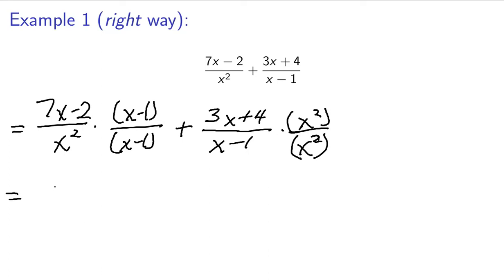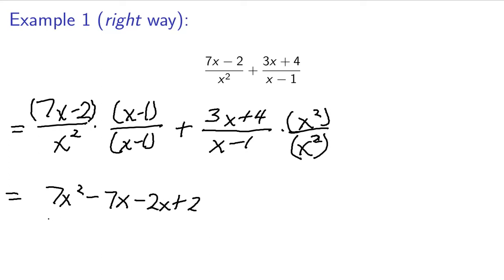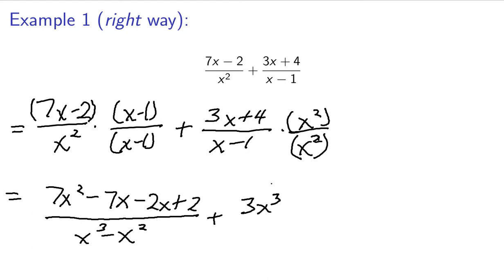So this becomes — I'm going to multiply these things together, and distribute them out. We have 7x times x giving us 7x squared, 7x times negative 1 giving us negative 7x, minus 2x plus 2, all over x cubed minus x squared. Plus, distributing the x squared on the right side, we get 3x cubed plus 4x squared, all over x cubed minus x.